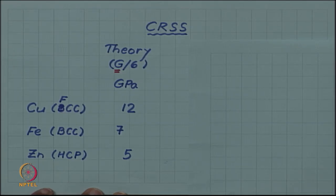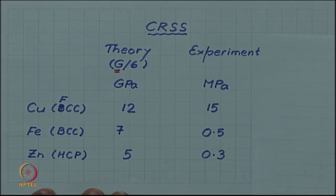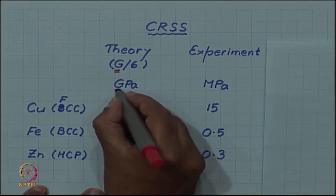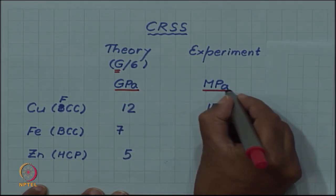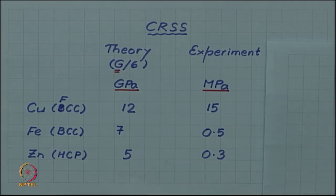However, when you compare this with theory there is a startling mismatch. So you can see the experimental value now, first of all look at the units, the theoretical values are being given in gigapascal whereas the experimental values are being written in megapascals. So there is an enormous difference between the theoretically predicted value and experimentally measured value, in particular the experimental values are much much much lower.